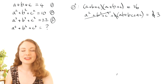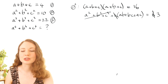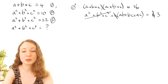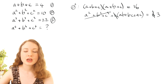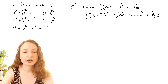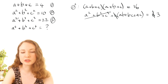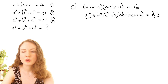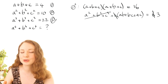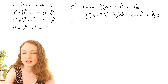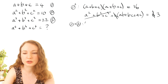Another thing we could do is multiply equation 1 by equation 2, because that's going to give us a³, b³, and so on, and we might be able to combine that with equation 3 somehow. So let's try equation 1 times equation 2.